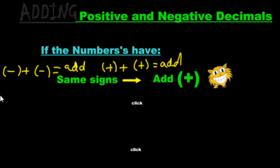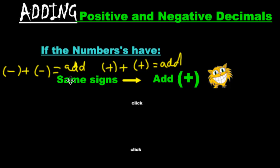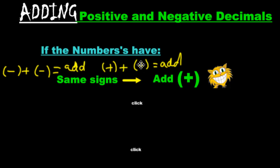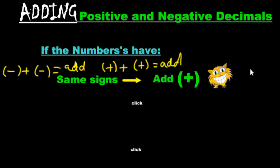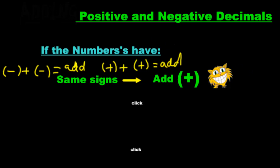Imagine negative numbers being bad guys. Two bad guys hanging out with each other — they get along, they're happy together. Happiness is symbolized by addition. And we have two good guys here — a good guy added to another good guy, they hang out, they're also getting along very well and they're both happy adding together. That's number one; you have to understand that. After you understand this, we'll move on to the second step.